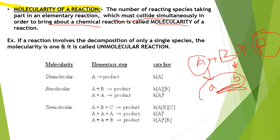An elementary step is represented as the first step or the reaction step. In unimolecular reactions it is a single step; in bimolecular it is two steps; in trimolecular it involves three steps.